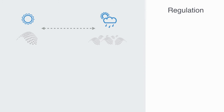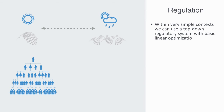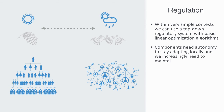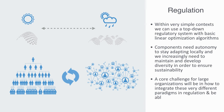From this, it should be clear that how we try to regulate an economic system will change fundamentally depending on the complexity of the system and the environment we're dealing with. Within very simple contexts, we can use a simple top-down regulatory system with a basic linear optimization algorithm. But as the environment becomes more complex, these top-down regulatory systems may not be the best solution, as components need autonomy to stay adapting locally, and we increasingly need to maintain and develop diversity in order to ensure sustainability. In such a context, more distributed forms of regulation are better suited. A core challenge for a large organization like a macro economy or corporation will be in how to integrate these very different paradigms in regulation and be able to switch between them.